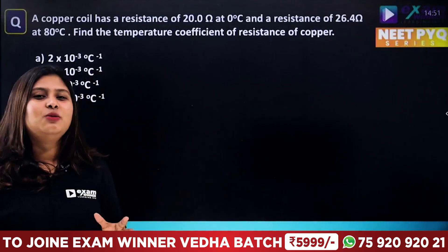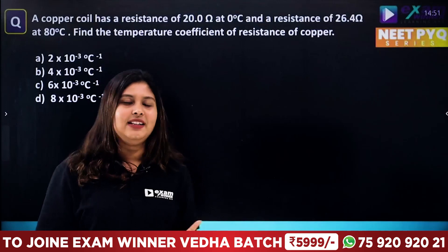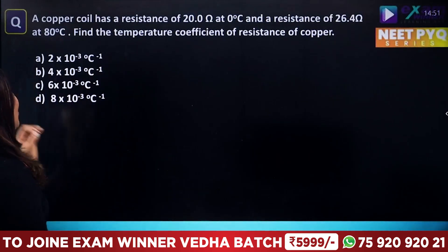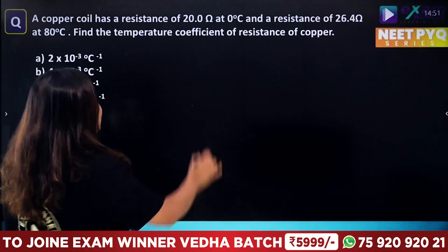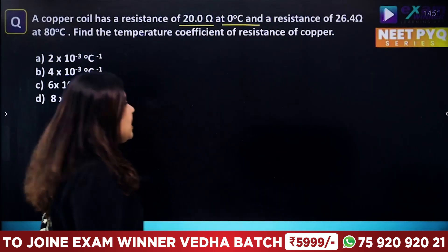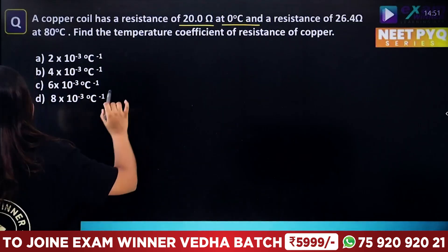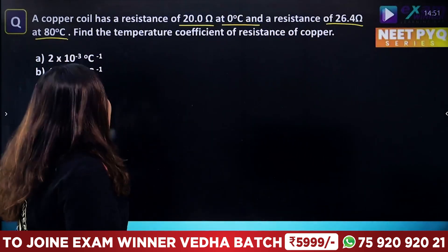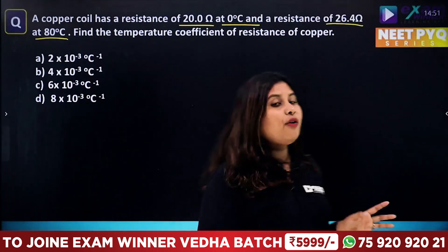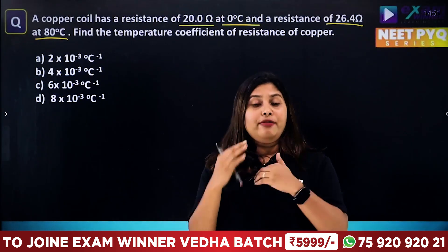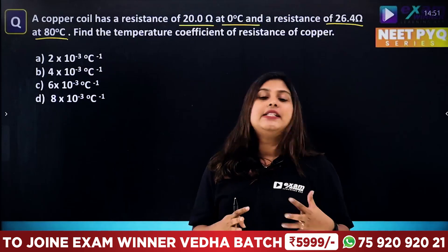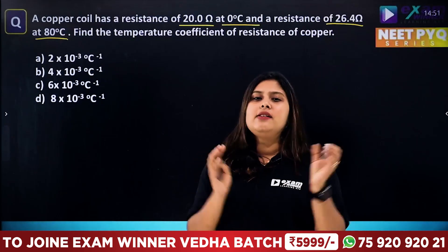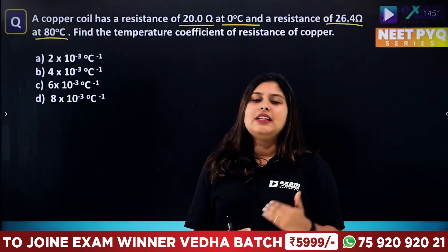If you ask a question about that, we are going to ask a lot of questions. What are we talking about here? A copper coil has a resistance of 20 Ohm at 0 degree Celsius and a resistance of 26.4 Ohm at 80 degree Celsius. Find the temperature coefficient of resistance of copper. This is the coefficient of temperature — the resistivity coefficient. We are going to answer temperature for conductors.